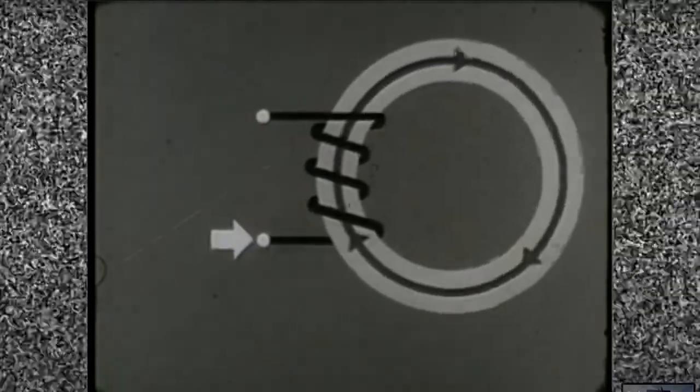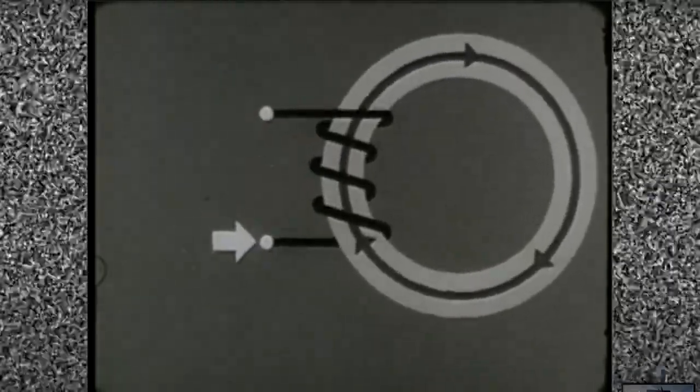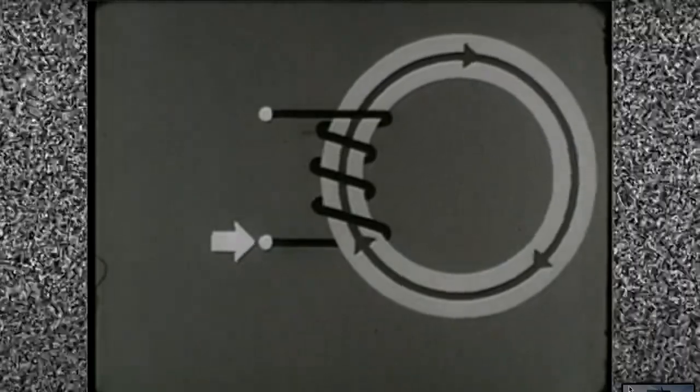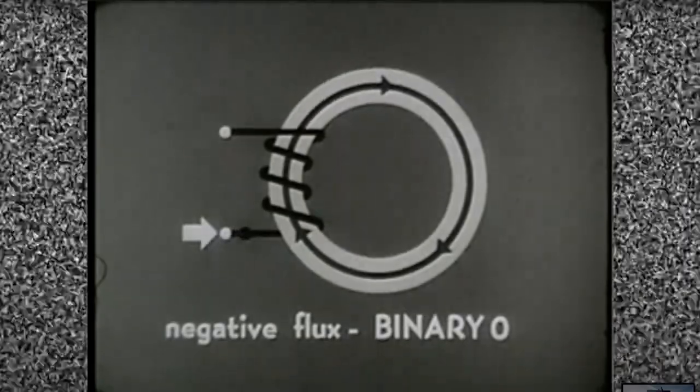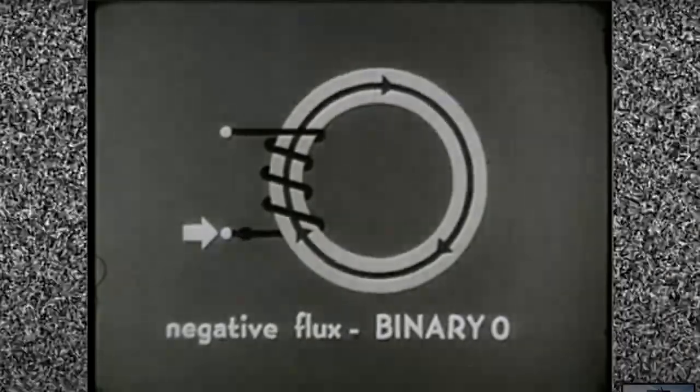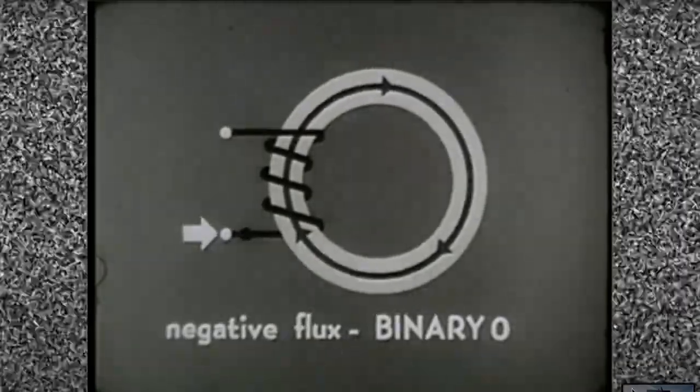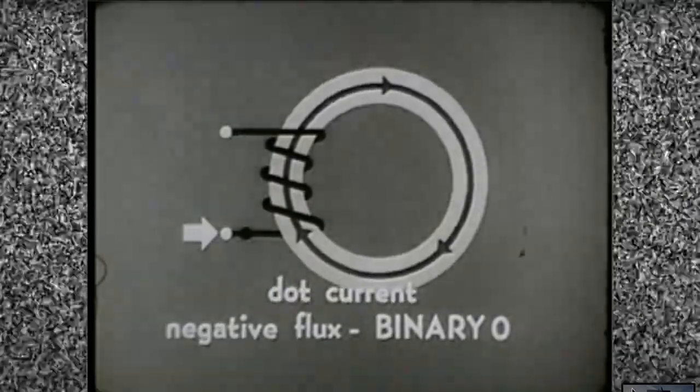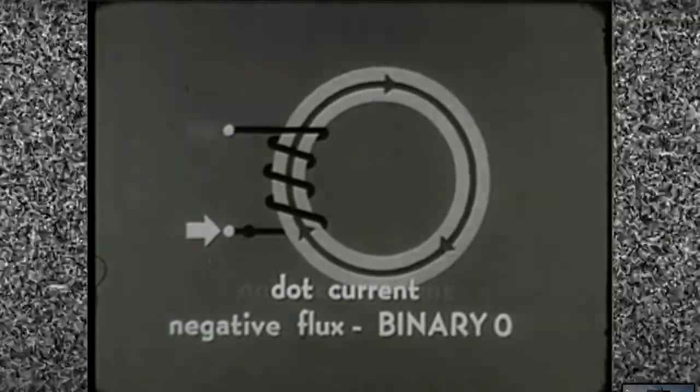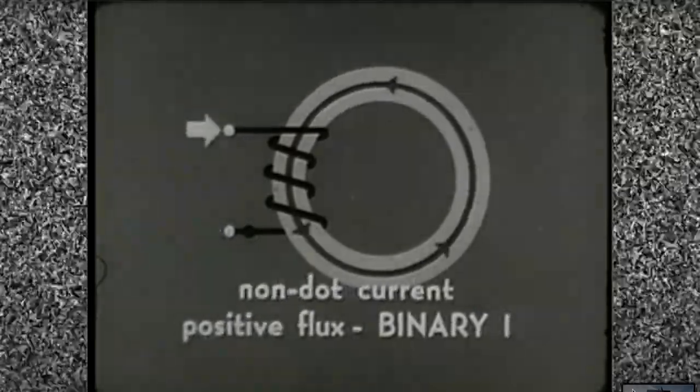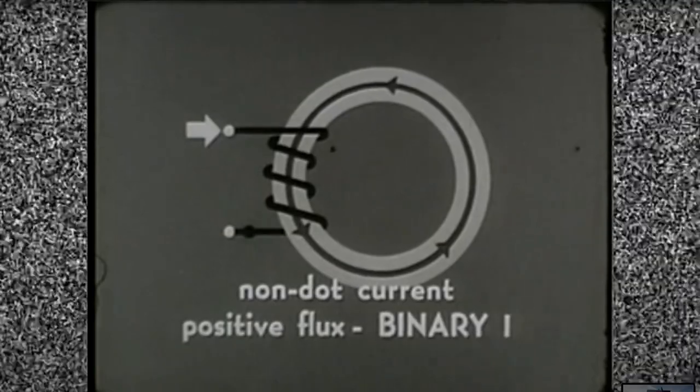To show the polarity of the winding in a core diagram, we mark one side with a black dot. By definition, current that flows into the winding from the dot side sets the core to zero. Current flowing into the non-dot side sets the core to binary one. Remember, non-dot current for one and dot current for zero.